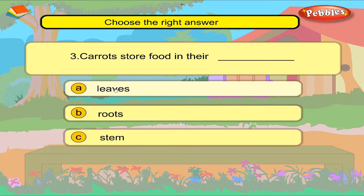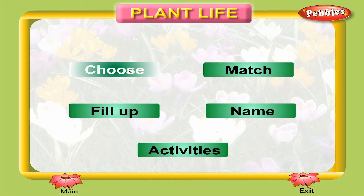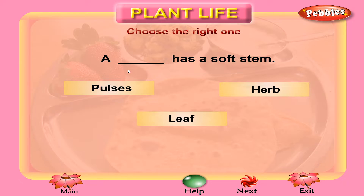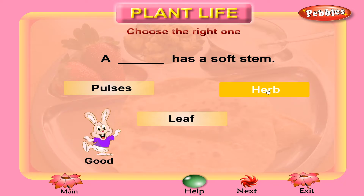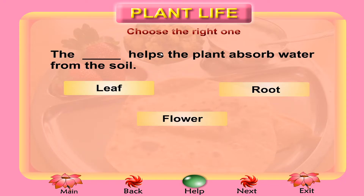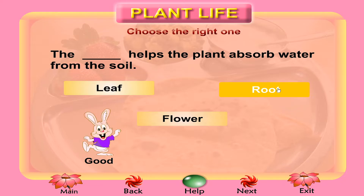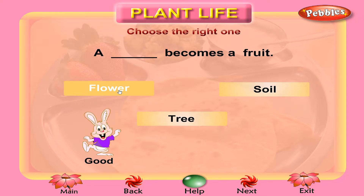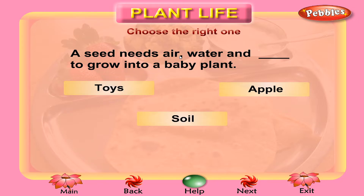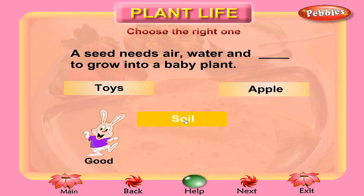Correct. Correct. Correct. Plant life — choose the right answer. You are wrong. You are right. You are right. You are right.